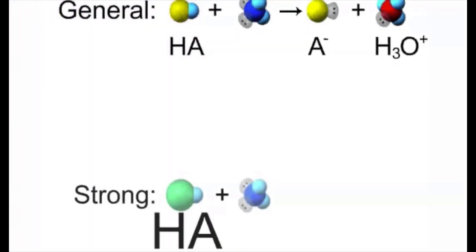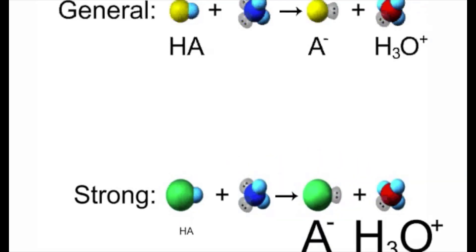This dissociation reaction happens via the transfer of a proton from the acid molecule, shown here as HA. HA is just a common way to denote a generic molecule of acid, and it can represent any acid molecule.